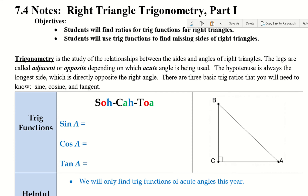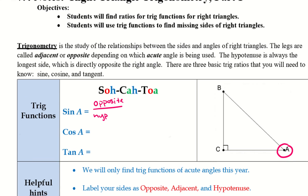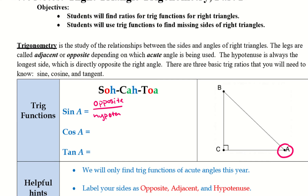It's asking us for angle A. So we have sine of A, cosine of A, and tangent of A — what that's talking about is this specific angle. When we have sine, that means we are going to be using opposite over hypotenuse.